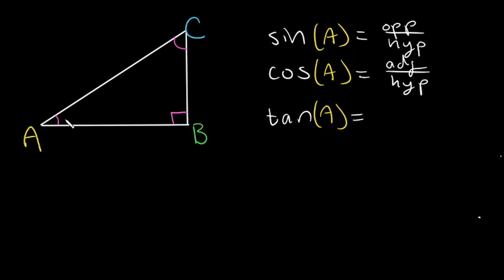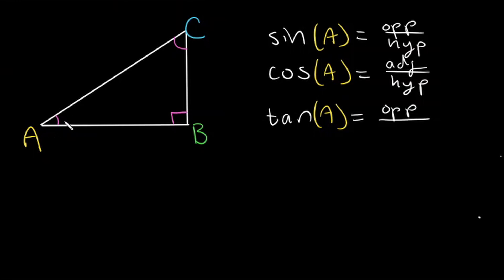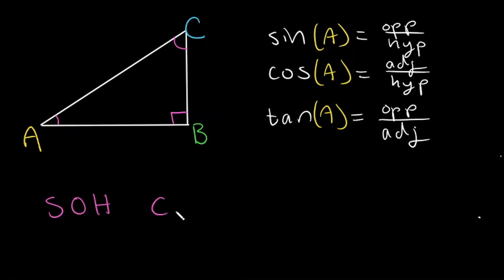To find the tangent of A, you start with the opposite again and then divide by the adjacent. Luckily for us, someone has created an acronym to remember these, and it is written as SOH-CAH-TOA. So sine is opposite over hypotenuse, cosine is adjacent over hypotenuse, and tangent is opposite over adjacent.